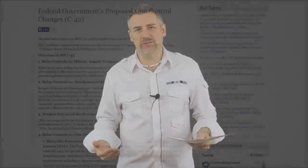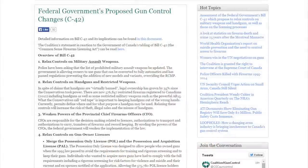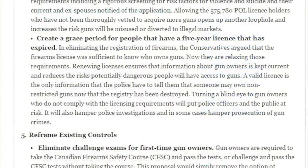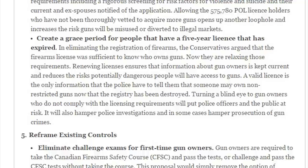Because it's important to see all sides. I'm going to read this real fast. There's a link in the description box if you want to go to their website and see it for yourself. Create a grace period for people that have had a five-year license that has expired. In eliminating the registration of firearms, the Conservatives argued that the firearms license was sufficient to know who owns guns. Now, they are relaxing those requirements.